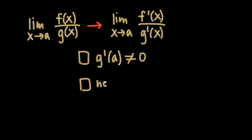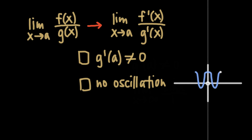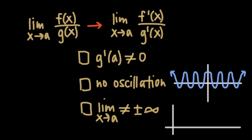Another scenario where L'Hôpital's rule doesn't work is when the function's value oscillates as x approaches a, rather than approaching a particular number. This will happen a lot with trigonometric functions, which are periodic, especially as x approaches positive or negative infinity. In other words, if the function just waves up and down, back and forth as you approach the number you're interested in, that means it's oscillating and L'Hôpital's rule isn't going to work. And finally, another way that the limit won't exist is if the limit is equal to infinity — saying the limit is infinity is just another way of saying the limit doesn't exist. So if the limit as x approaches a is either positive or negative infinity, L'Hôpital's rule won't work.